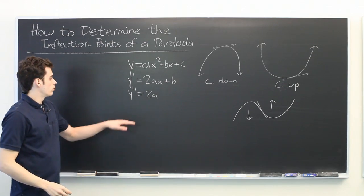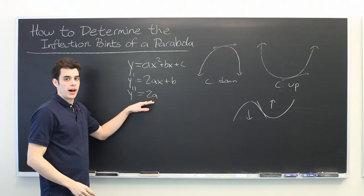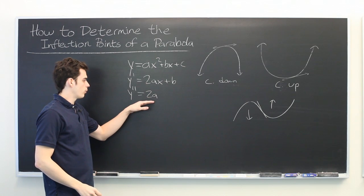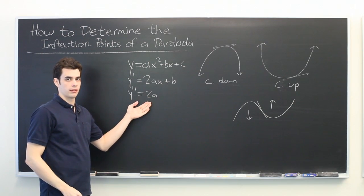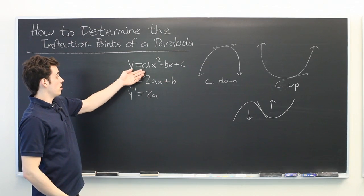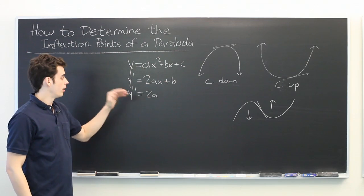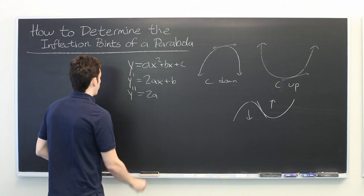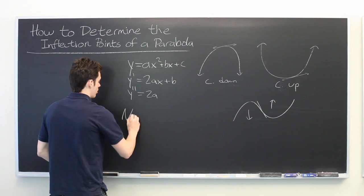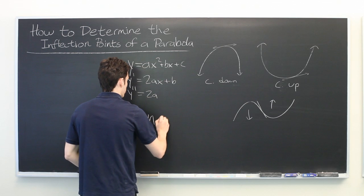So our question is when does this change sign from positive to negative? Well, the answer is it never changes sign because this is just a constant. It doesn't matter what your constant is. It could be positive, negative, or zero. This will always be a constant. So the answer is for a parabola of this form there are no inflection points.